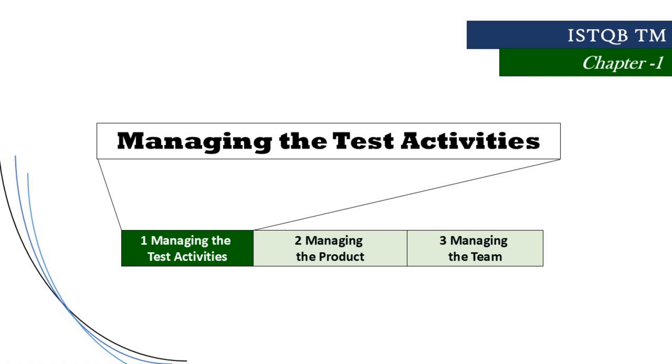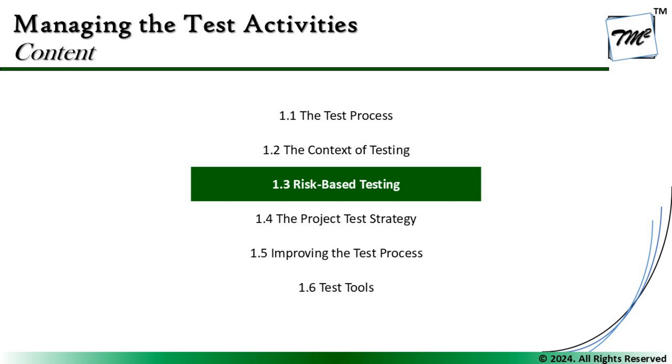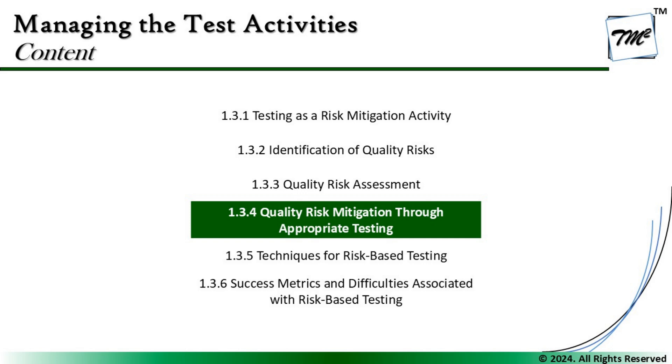Hello friends and greetings for the day. Welcome back to another tutorial on ISTQB Advanced Level Test Management Certification. We are in Chapter 1 talking about managing the test activities, continuing with section 1.3 on risk-based testing. Today we shall be looking at the next sub-segment, 1.3.4: Quality Risk Mitigation through Appropriate Testing. We will understand what it takes for the testing team to define mitigation steps when a risk has been analyzed.